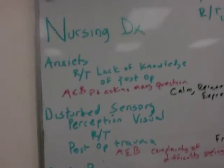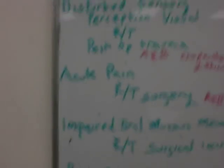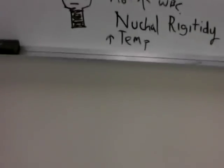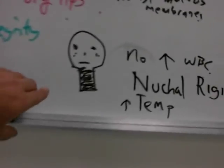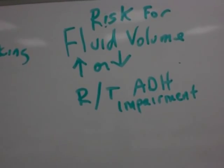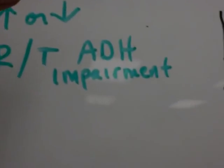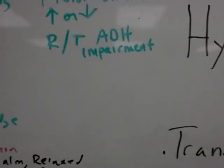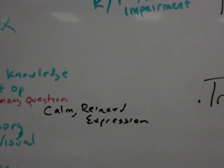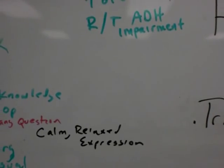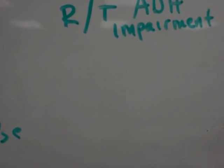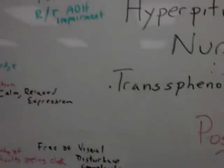Some nursing diagnoses to consider: anxiety, disturbed sensory perception — visual — acute pain, impaired oral mucous membrane, and risk for infection. For risk of infection, focus on meningitis and nuchal rigidity. Also consider risk for fluid volume excess or deficiency related to ADH impairment. Remember the relationship between the hypothalamus and the pituitary gland — the hypothalamus has osmoreceptors monitoring blood osmolality and, if needed, causes the pituitary to secrete ADH to maintain fluid balance. If you tinker with the pituitary gland in surgery, all bets are off and you could have a problem.